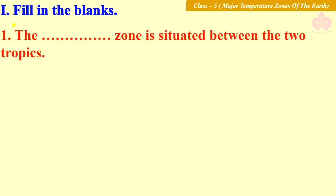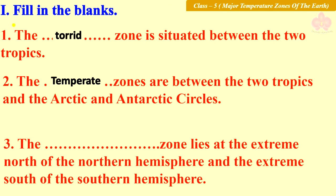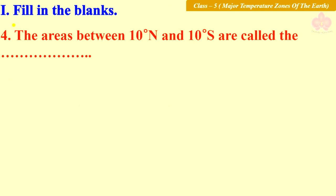First question: Fill in the blanks. Number one: The blank zone is situated between the two tropics — the answer is torrid. Number two: The blank zones are between the two tropics and the Arctic and Antarctic circles — the answer is temperate. Number three: The blank zone lies at the extreme north of the northern hemisphere and the extreme south of the southern hemisphere — the answer is frigid.